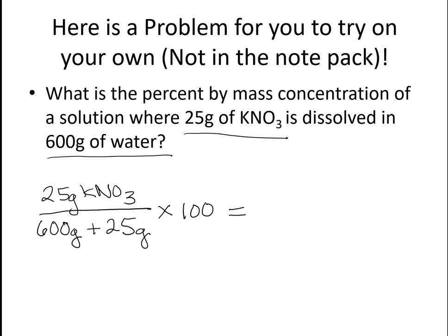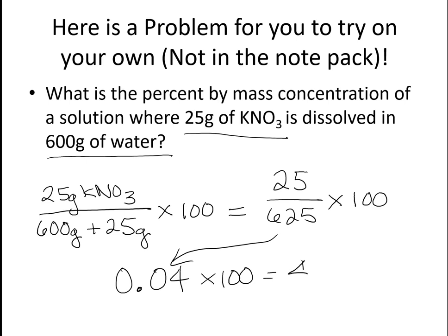So this would be 25 divided by 625 times 100. So when I take 25 and divide it by 625, I don't need to show you that again, you will get 0.04, and then we multiply that by 100, and we will get 4%. So in this situation where we have taken 25 grams of potassium nitrate and dissolved it in 600 grams of water, making 625 total grams of solution, that would be a 4% by mass solution.